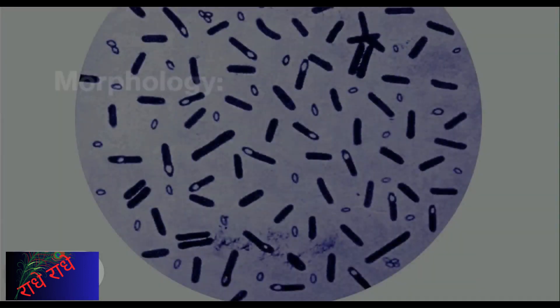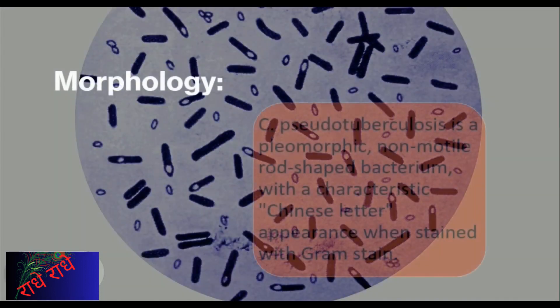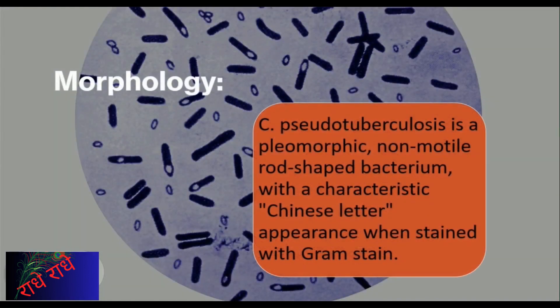C. pseudotuberculosis is a rod-shaped bacterium unable to move. A gram-stain reveals an easily identifiable Chinese letter shape, brought about by its pleomorphic nature enabling a range of shapes and sizes.